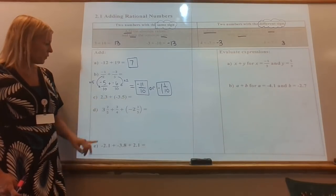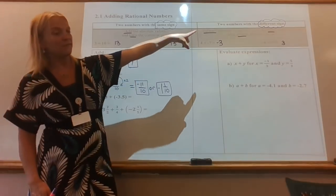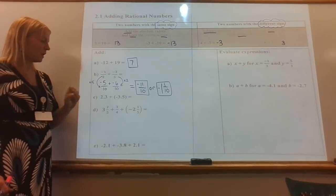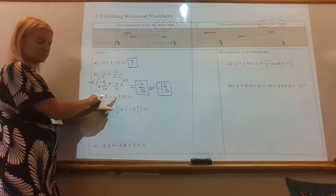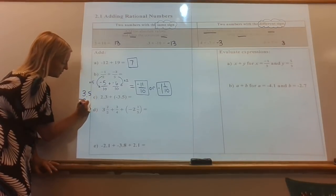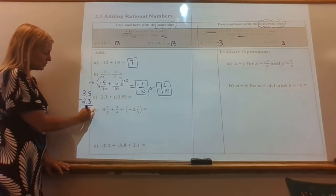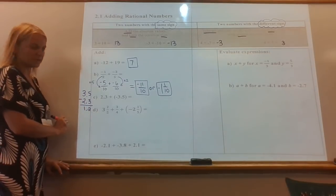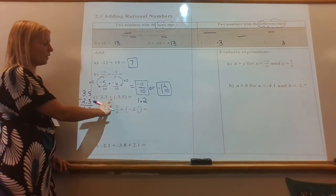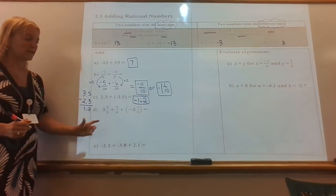Next, some decimals. We have to ask ourselves — are these the same or different? One's positive, one's negative, so those are different signs. I'm going to subtract the numbers. When subtracting, you do big number minus small. Ignoring the negative, 3.5 is bigger than 2.3, so I line them up: 3.5 minus 2.3. Five minus 3 is 2, 3 minus 2 is 1, keep that decimal in place — so the result is 1.2. The 3.5 was larger and it's negative, so my answer is negative 1.2.